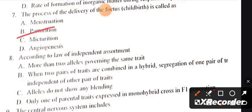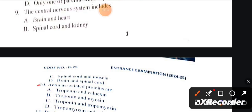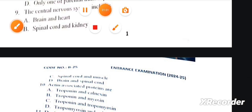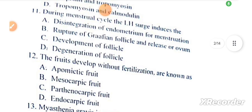The central nervous system includes brain and spinal cord. Actin-associated proteins are troponin and myosin. Question 11: During the menstrual cycle, the LH surge induces the rupture of Graafian follicle.